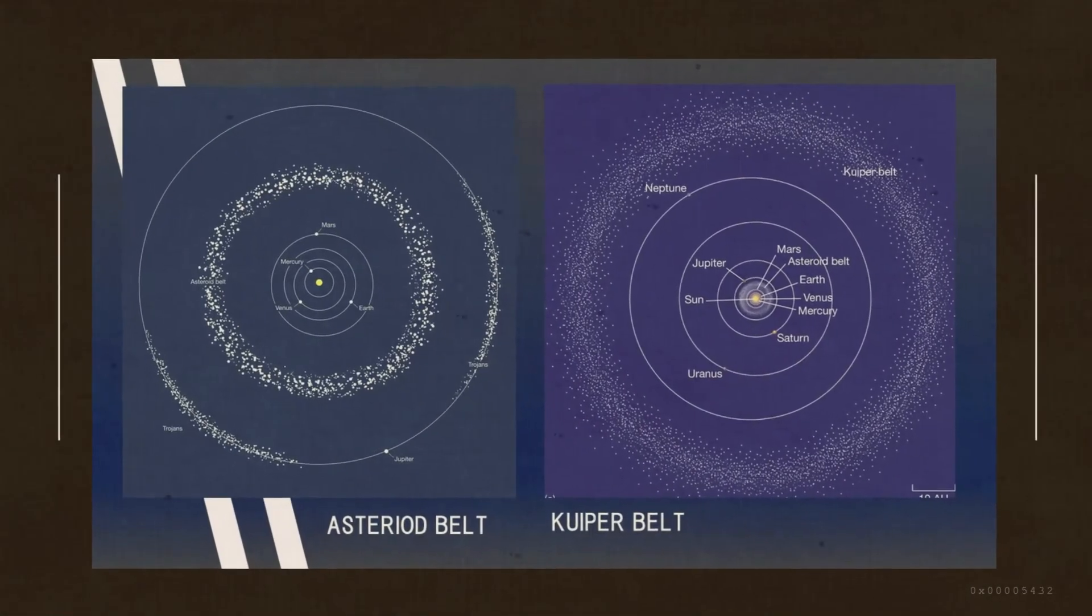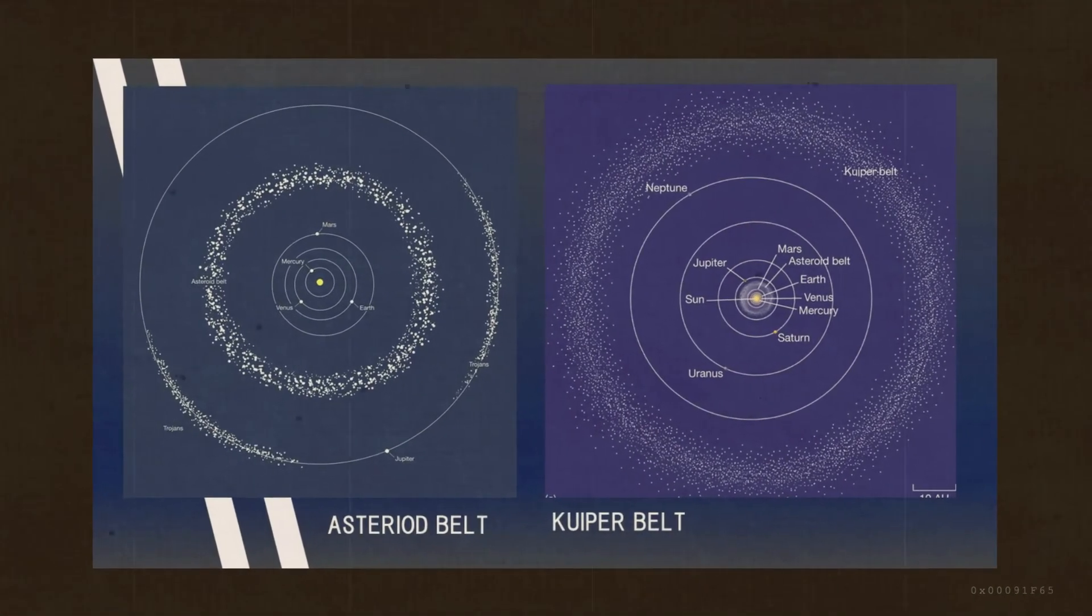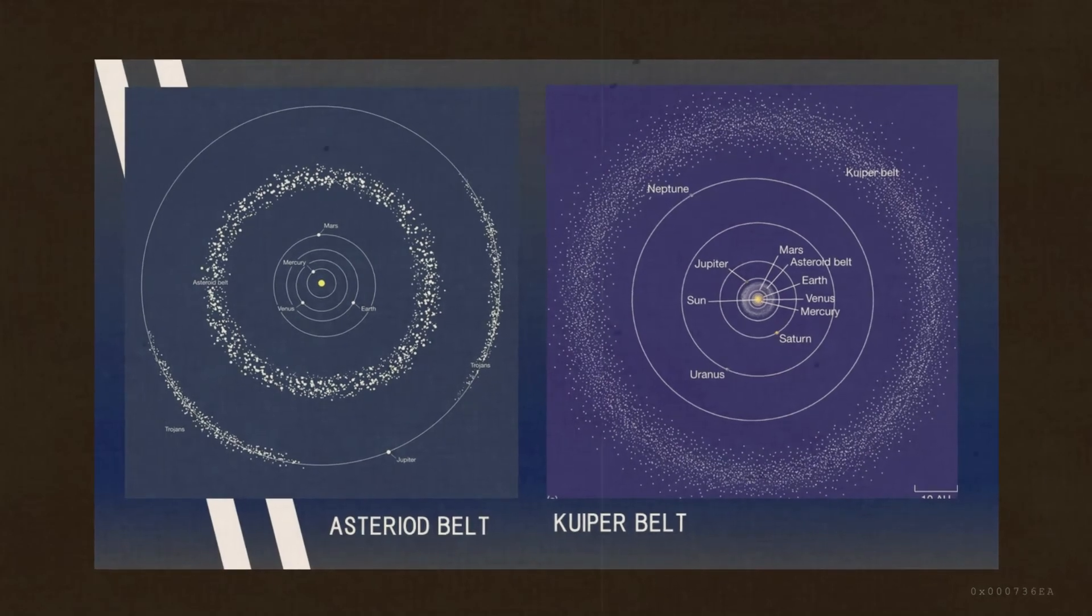Asteroid Belt is a region of space between the orbits of Mars and Jupiter, where most of the asteroids in our solar system are found.